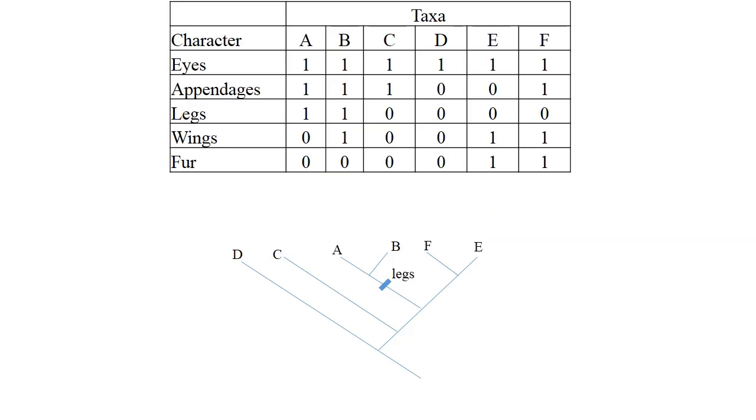In the end, we need to map all the other characters on the tree based on the principles of parsimony, meaning using the smallest number of steps. We have eyes. Eyes will go at the bottom here because all of them have eyes.